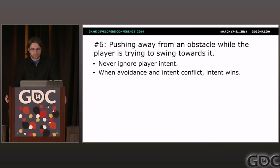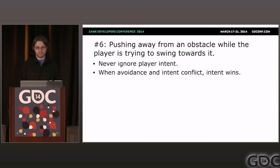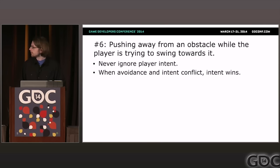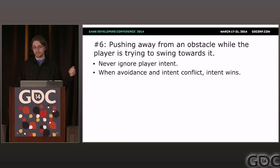However, we have a conflict: pushing away from an obstacle while the player is trying to swing towards it. It's important to always honor the player's intent — if the player wants to turn the camera one way, the camera must turn that direction. When the camera wants to swing away from an obstacle but the player is swinging toward it, the only solution is to pull the camera closer. As long as we know ahead of time that the obstacle is on the side we're trying to avoid, we can gradually interpolate the camera closer to the avatar so that by the time the obstacle is in the way, we're already squeezing by.